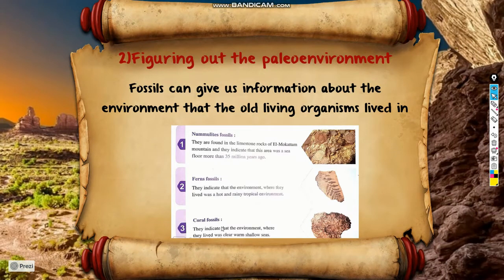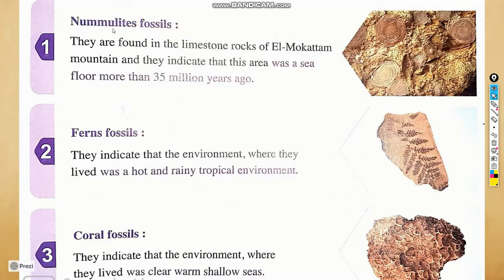The second importance is figuring out the paleo-environment. This means we can determine information about the kind of environment old living organisms lived in. For example, nummulite fossils found in limestone rocks in Al-Muqattam Mountain indicate that this area was a sea floor more than 35 million years ago. Fern fossils indicate a hot and rainy tropical environment. Coral fossils indicate clear, warm, and shallow seas.